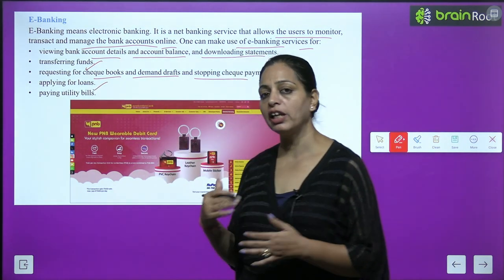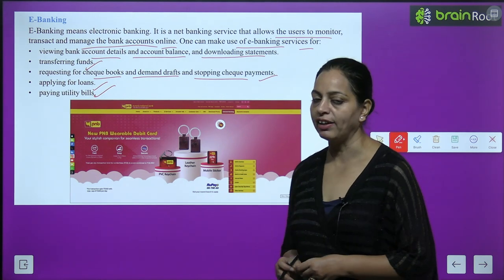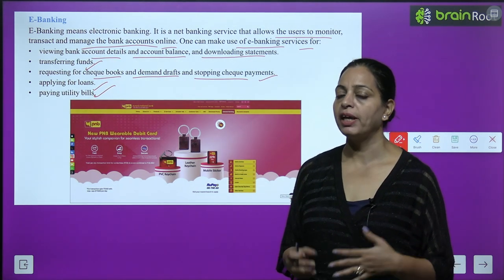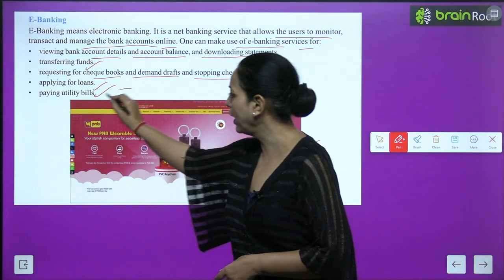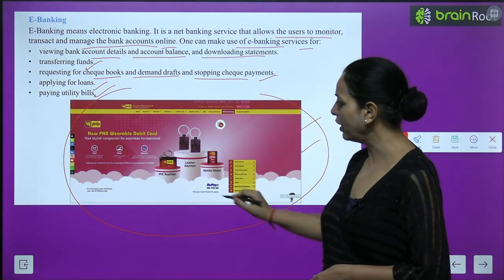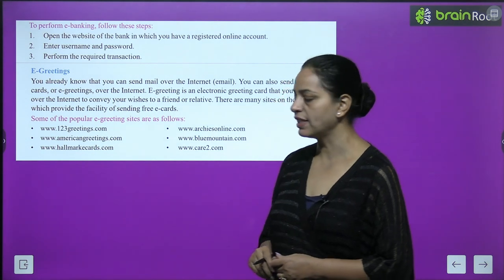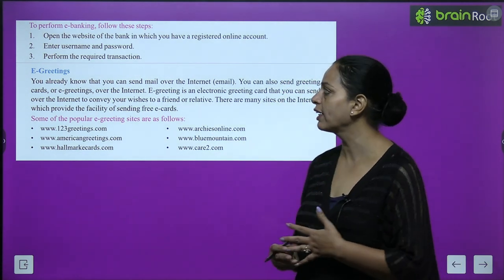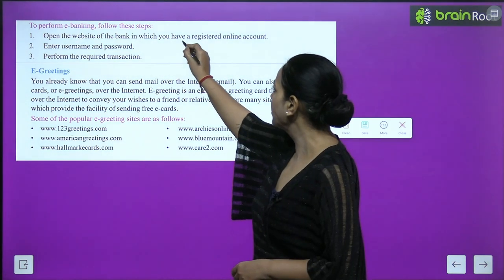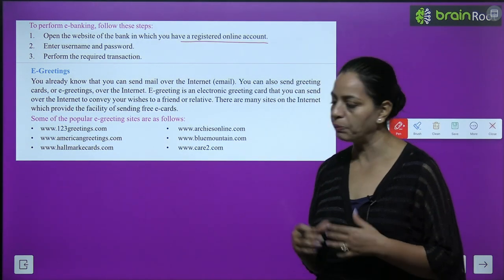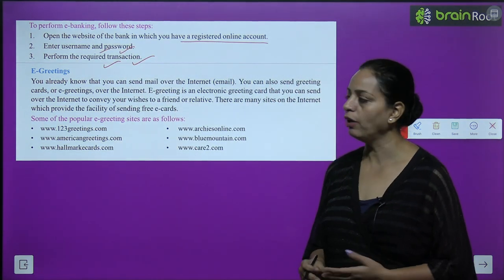With e-banking you can also apply for loans and pay utility bills. There is no need to go to the bank. To perform e-banking, follow these steps: open the website of the bank in which you have a registered online account, enter your username and password, and perform the required transaction. For example, Punjab National Bank offers such online services.